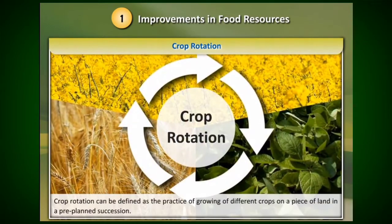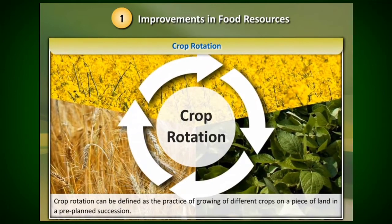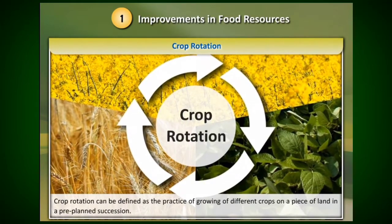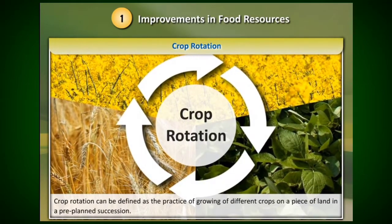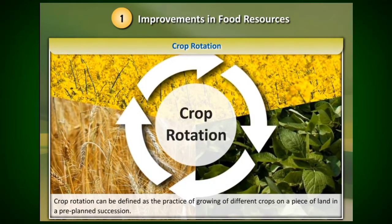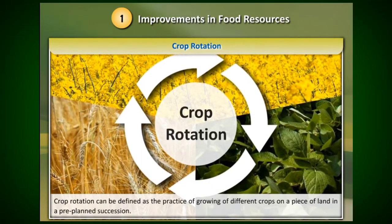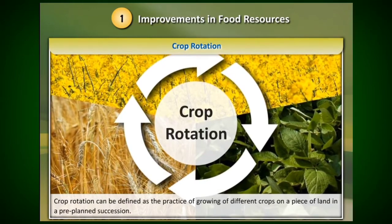Crop rotation can be defined as the practice of growing different crops on a piece of land in a pre-planned succession.